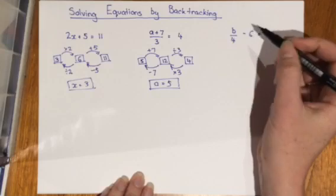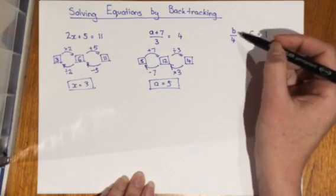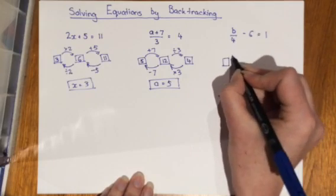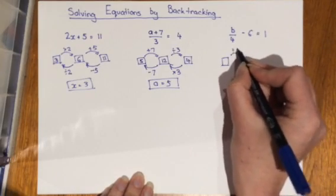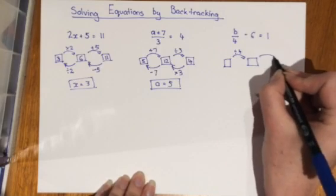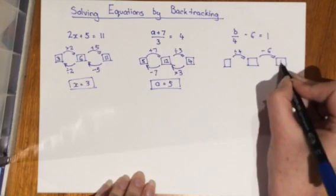Our final example b over 4 minus 6 equals 1. The first thing that's happened to the b is it's over 4. Remember over means divide. So the first thing that happened was divide by 4. The second thing was minus 6 giving a result of 1.